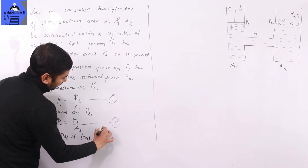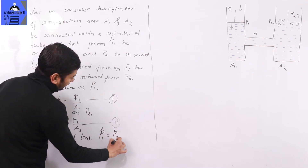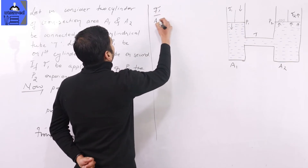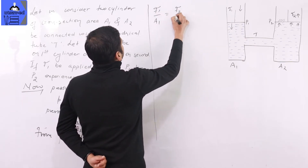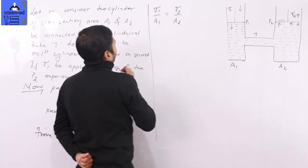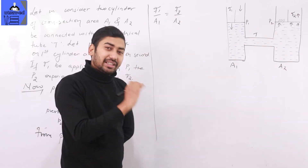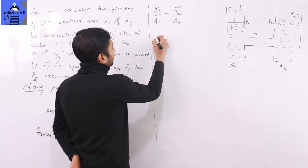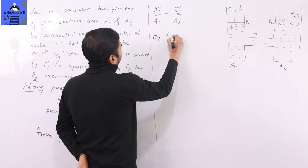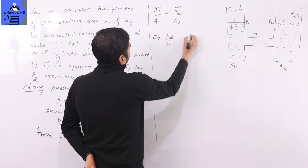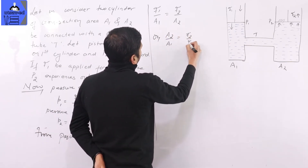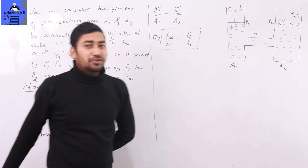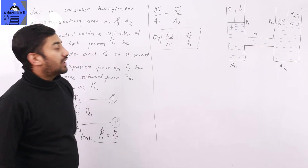So small p1 equals small p2, which gives us F1 divided by A1 equals F2 divided by A2. This is the final expression for the working of a hydraulic machine.